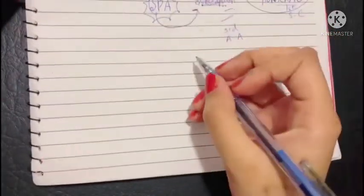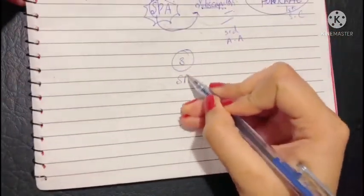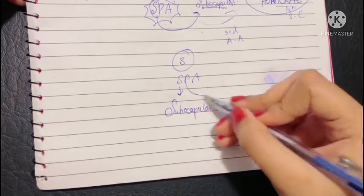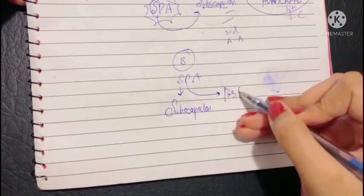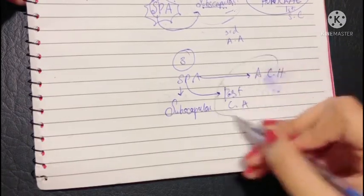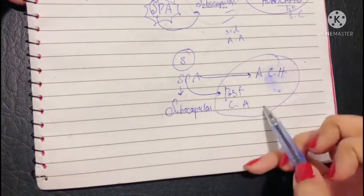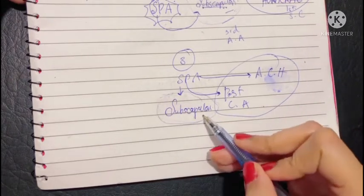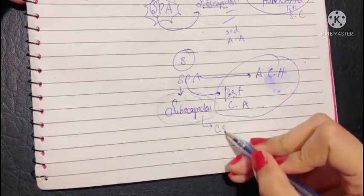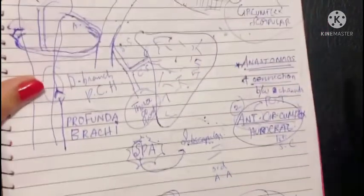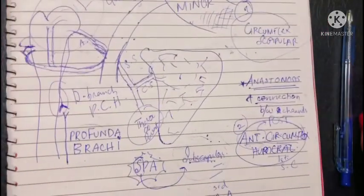All in all, we have talked about the third part having three branches — the SPA. The subscapular branch is the largest branch of the entire axillary artery. The posterior circumflex humeral and the anterior circumflex humeral both take part in the humeral anastomosis around the surgical neck of the humerus. The subscapular branch, via its circumflex scapular branch, forms part of the anastomosis around the scapula. That was all about the branches of the axillary artery. Thank you so much for watching.